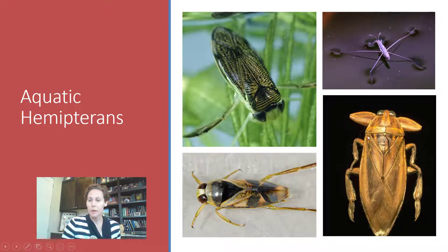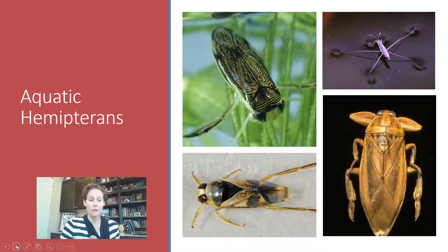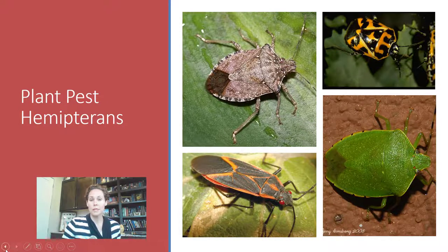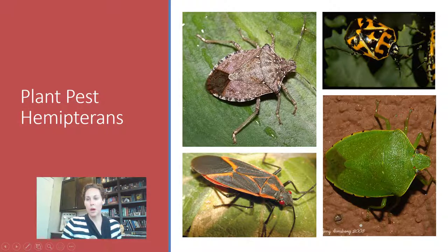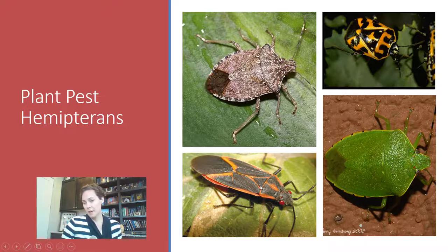Hemipterans are found in many different environments, including aquatic ones. You can see the triangular shape in many of these pictures. We've got a brown stink bug on the top left — you can really see the change in the wing pattern. The harlequin bug on the top right shows its triangle clearly. The green stink bug also shows its triangle and the overlapping membranous wings. There's also what might be a red-shouldered bug with a little tiny triangle and a change in the wings.